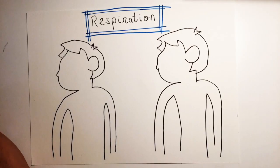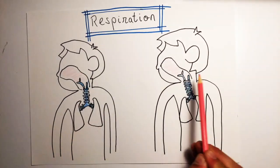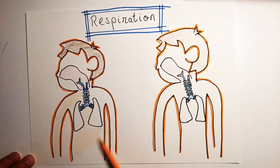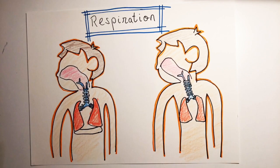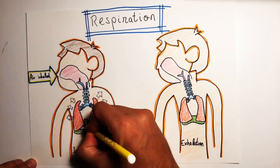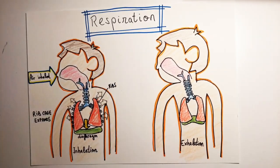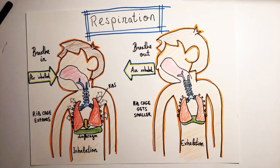Respiration takes place in the respiratory system. Respiration is the process by which we breathe in or inhale to obtain the oxygen our body needs, and we breathe out or exhale to expel the carbon dioxide our body produces.